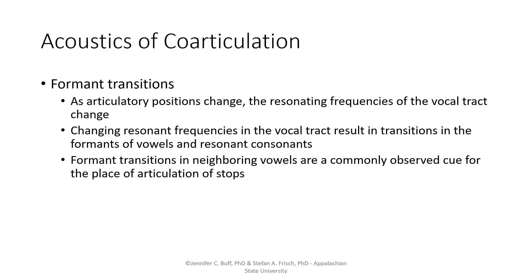One of the most robust indicators of continuous articulation and co-articulation between sounds is that the formants go through transitions. As articulatory positions change, the resonating frequencies of the vocal tract change, and these changing resonant frequencies result in changes in the formants of vowels or in resonant consonants. In addition, formant transitions in neighboring vowels are a commonly observed cue for the place of articulation of stops. Since stops are mostly silence, other non-silent parts of the speech are needed to determine which stop you're hearing.